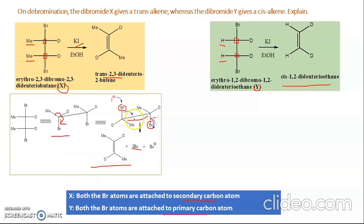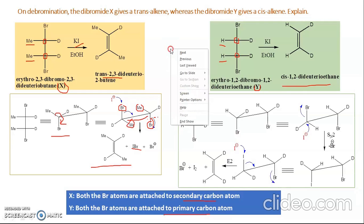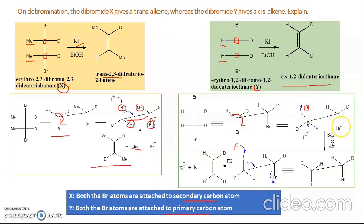Finally we are getting the trans product, because the two methyl groups are trans to each other. For molecule Y, we again draw the sawhorse and rotate so the two bromine atoms are trans, but unlike the previous case where E2 elimination is taking place, here iodide is attacking from the opposite side of the C–Br bond — that is inversion — so this is SN2, not E2. The reason is that these two carbon atoms are primary.